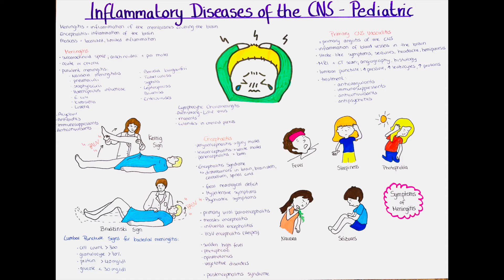The clinical manifestation of meningitis is often nonspecific, but there are a few hallmarks. Typical nonspecific symptoms are fever, severe headache, nausea and vomiting. Later on, drowsiness, confusion, stiffness of the neck, seizures and non-blanching rash, photophobia and tachypnea often develop.